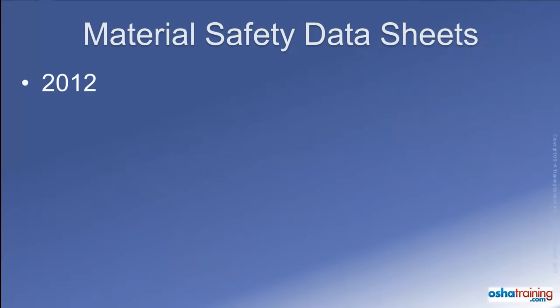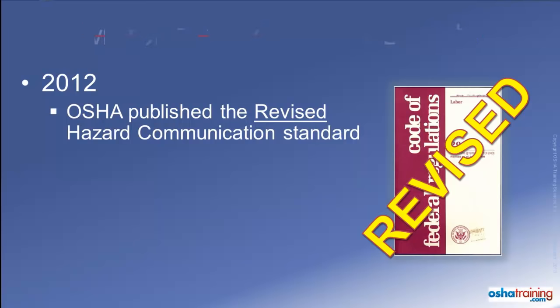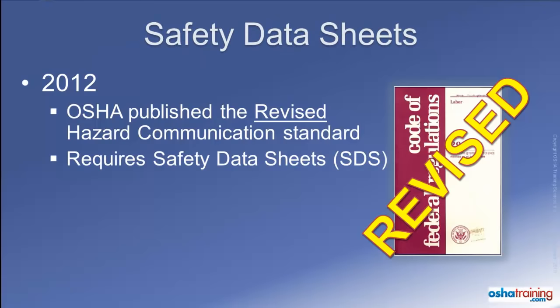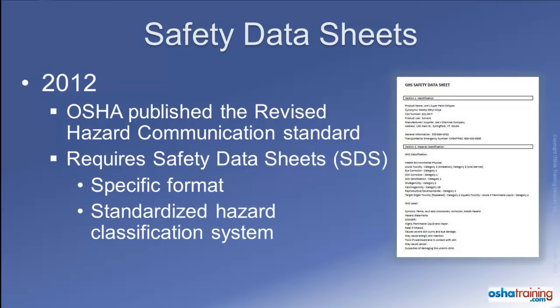So, in 2012, OSHA revised their Hazard Communication Standard and did away with the requirements for material safety data sheets. Now, manufacturers and distributors of hazardous chemicals and products will have to start providing a new informational document called a safety data sheet, or SDS. While the information contained on new safety data sheets is very similar to that appearing on the old MSDSs, the information will now have to follow a specific format and order. There is also a standardized hazard classification system that must be utilized on all SDSs to convey information about the physical and health-related hazards associated with that product.